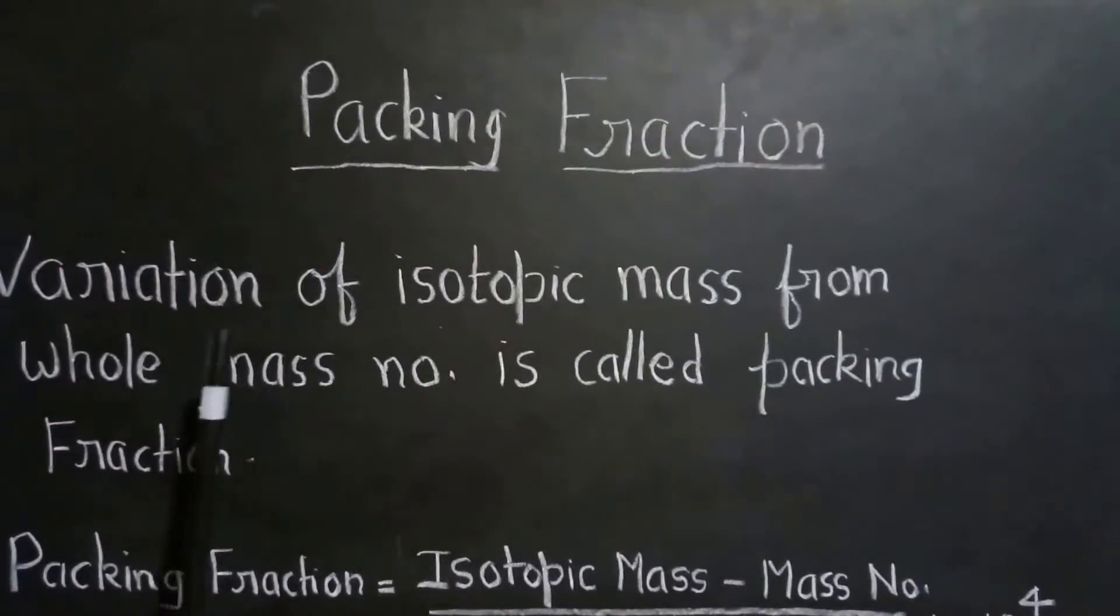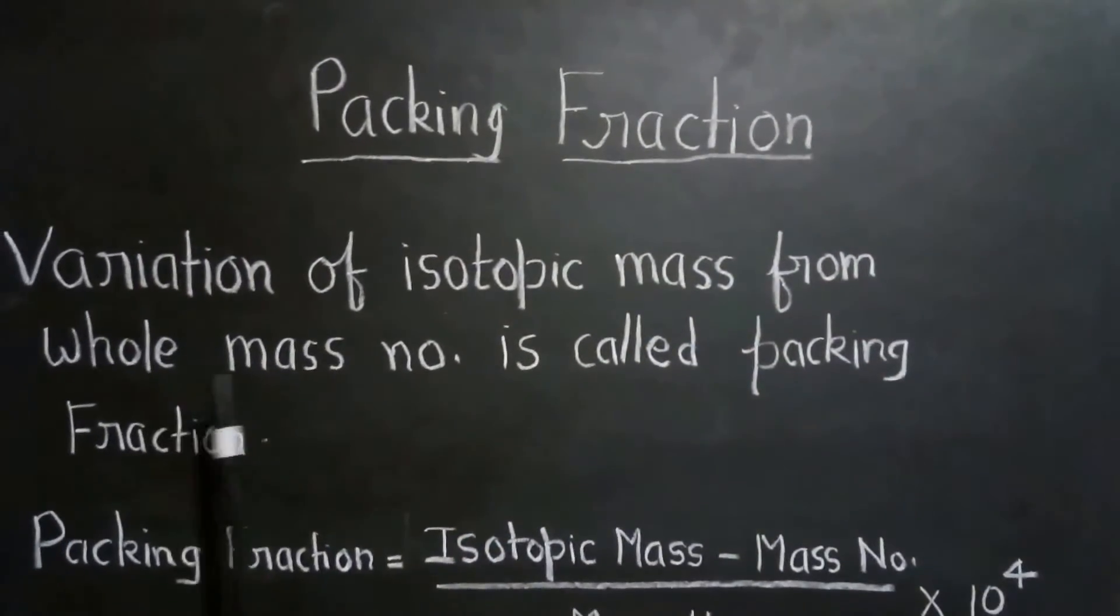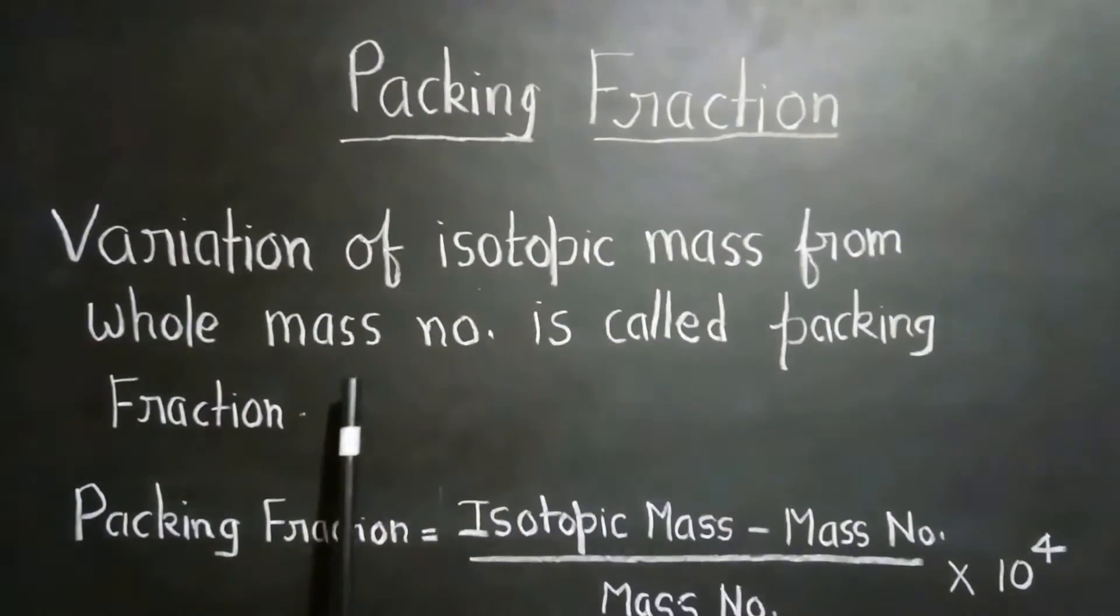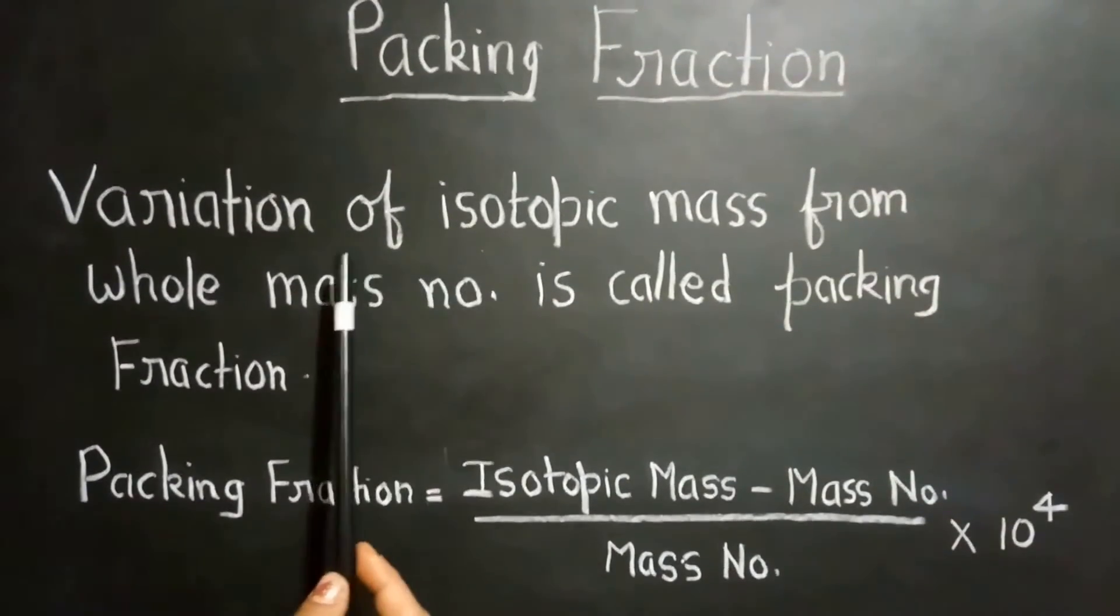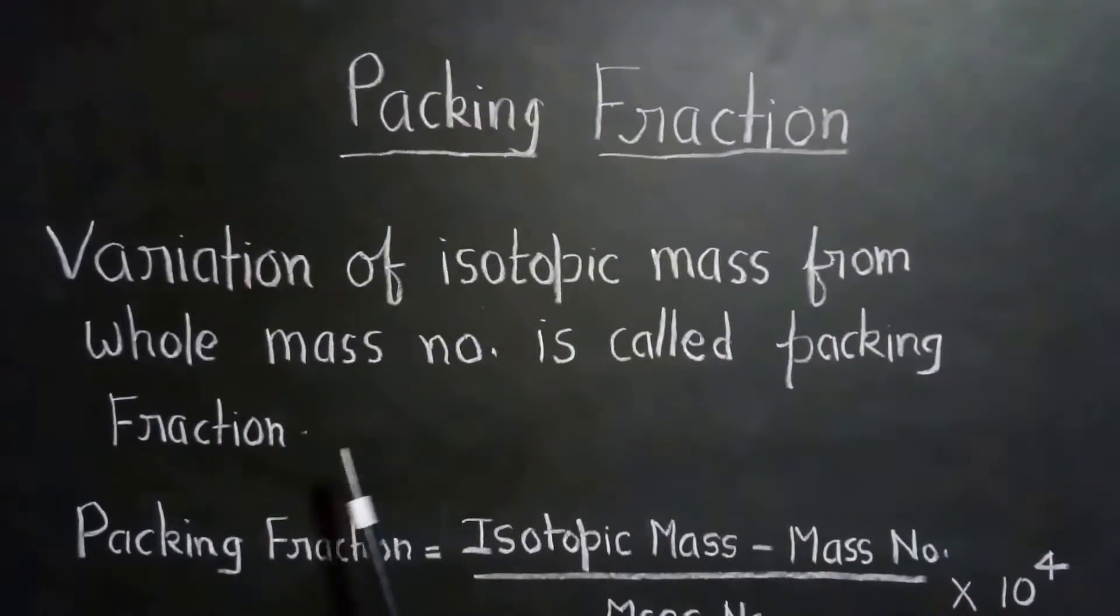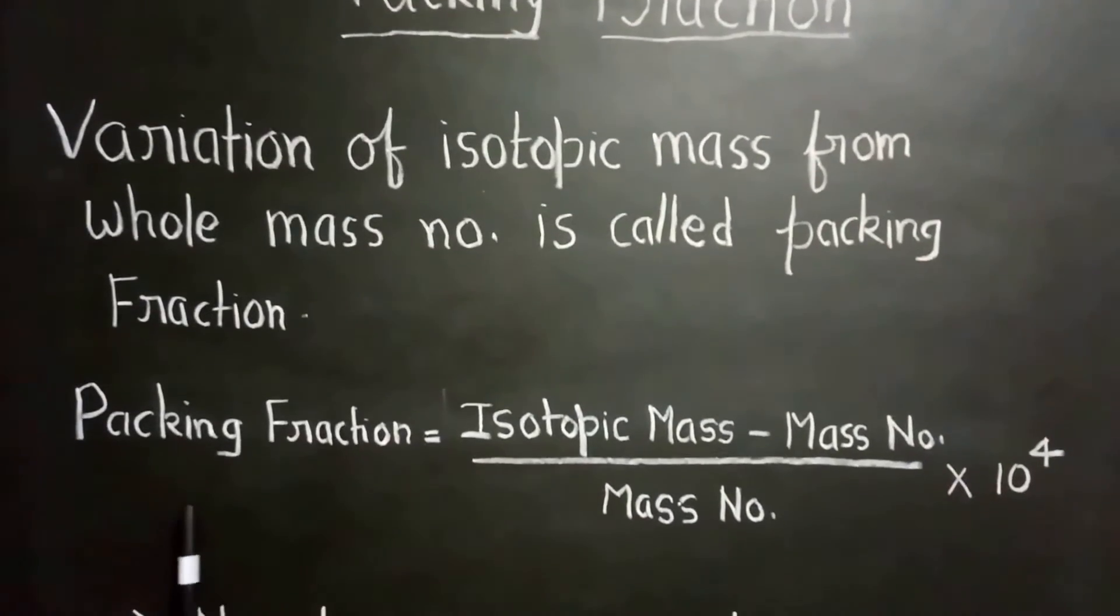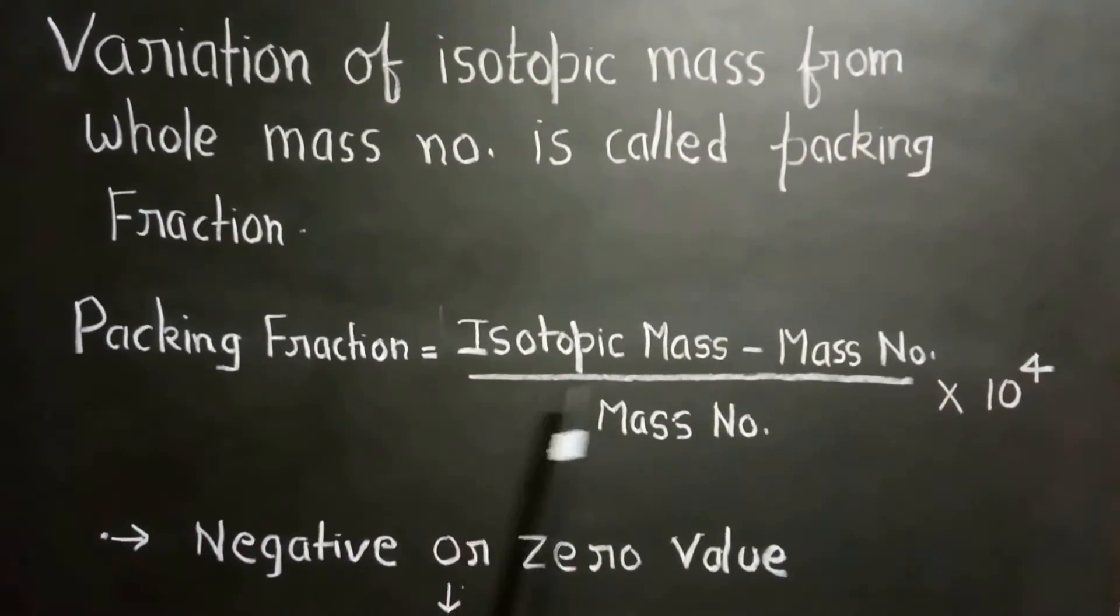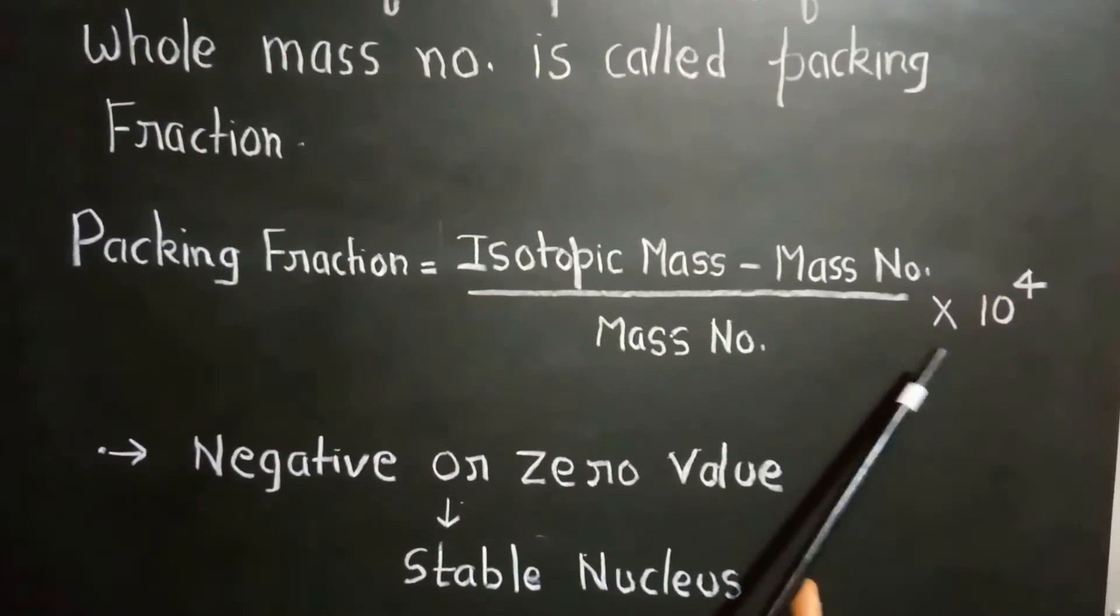The next term is packing fraction. What is packing fraction? As we know that the mass number is a whole number for each atom, but the isotopic mass is a fractional number. So the variation of isotopic mass from the whole mass number is denoted by packing fraction. We can give the packing fraction by the following formula.